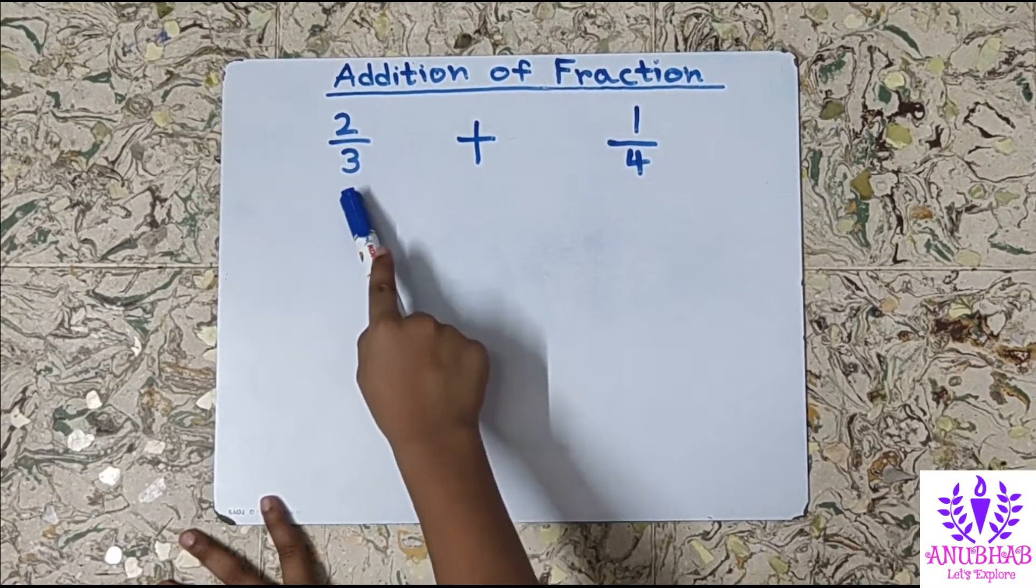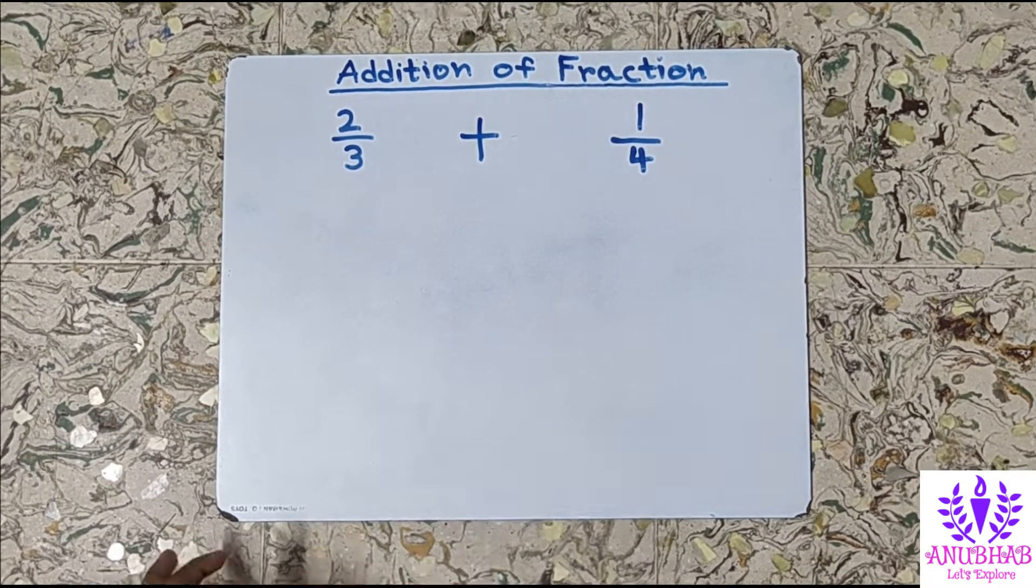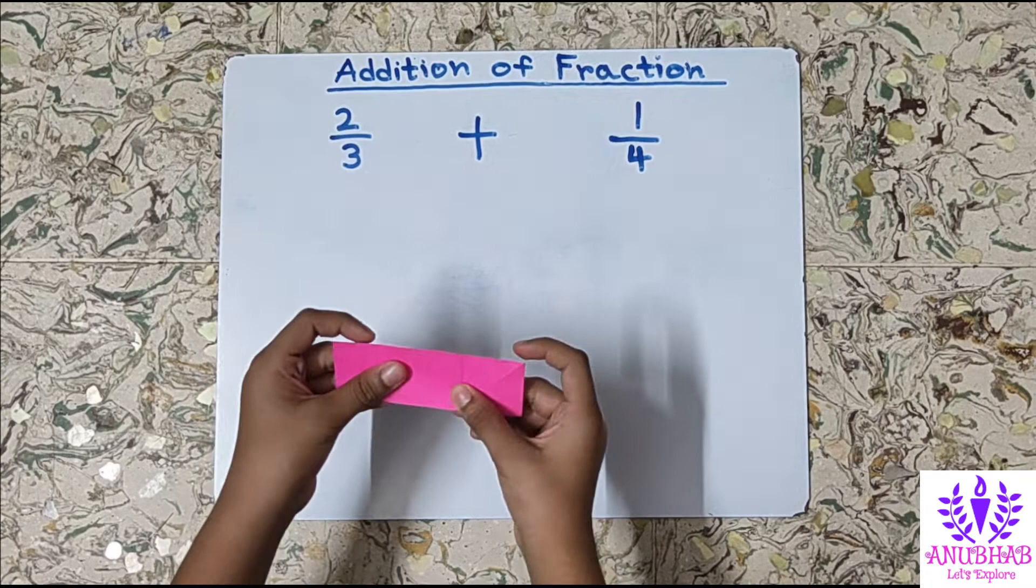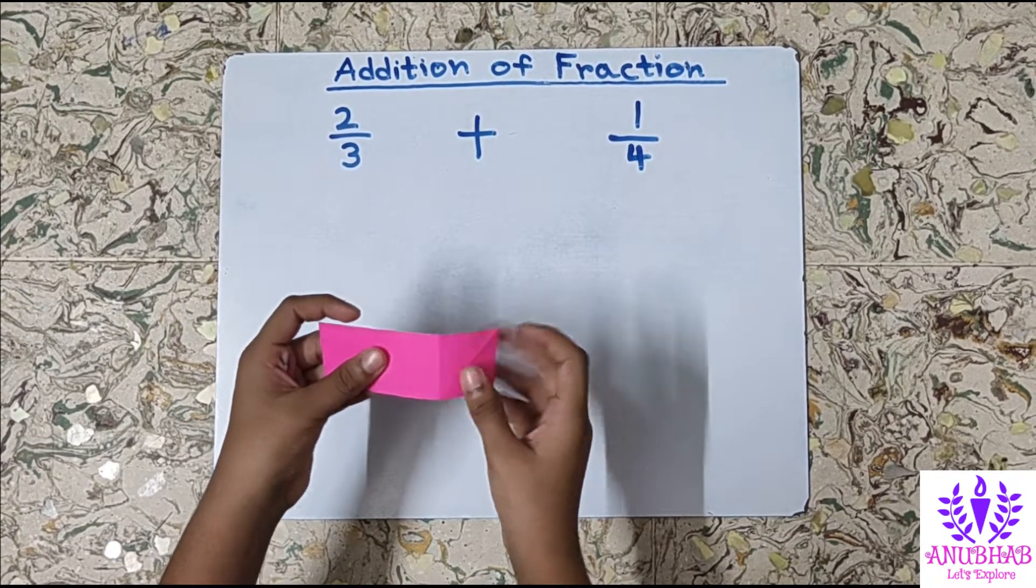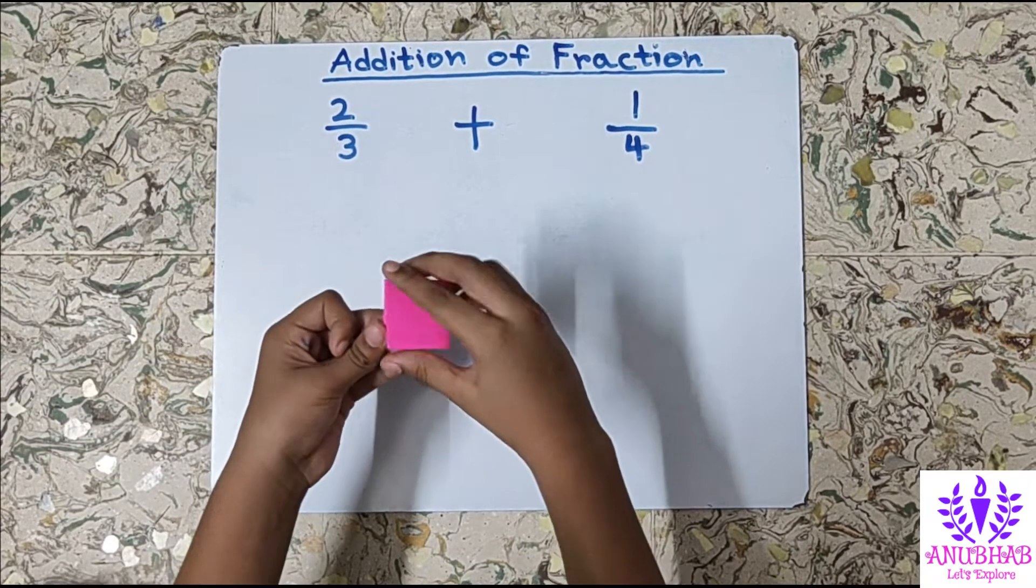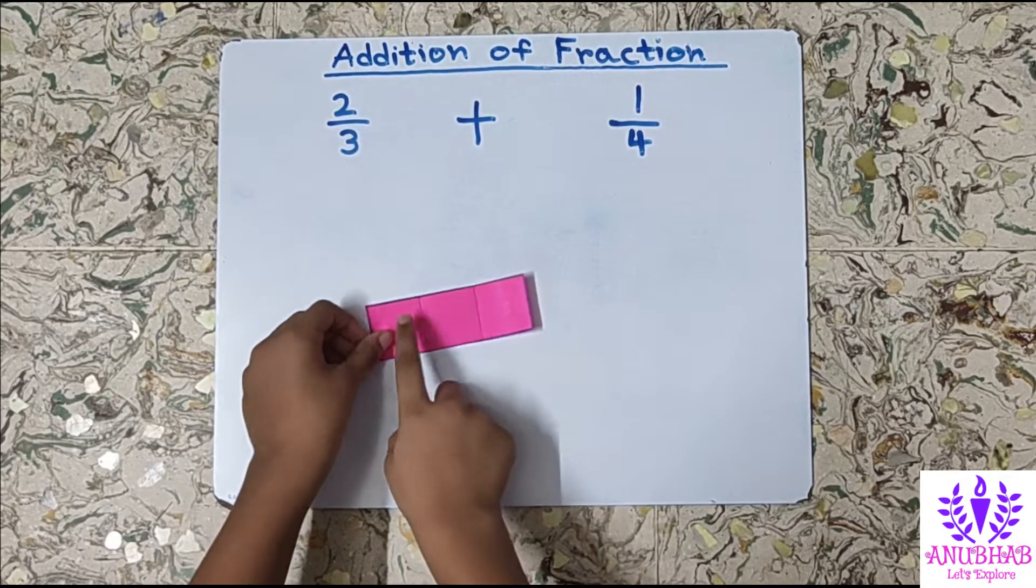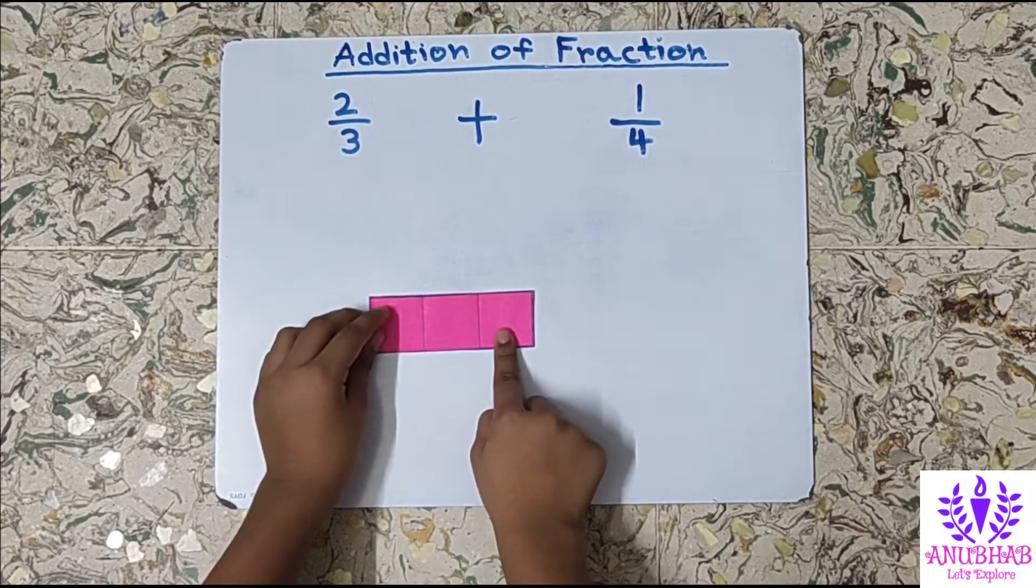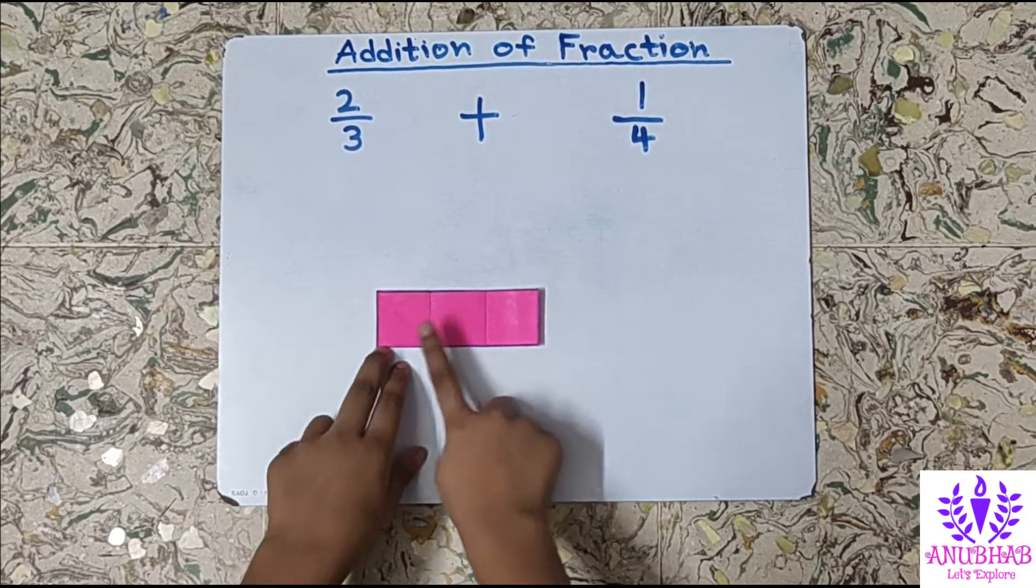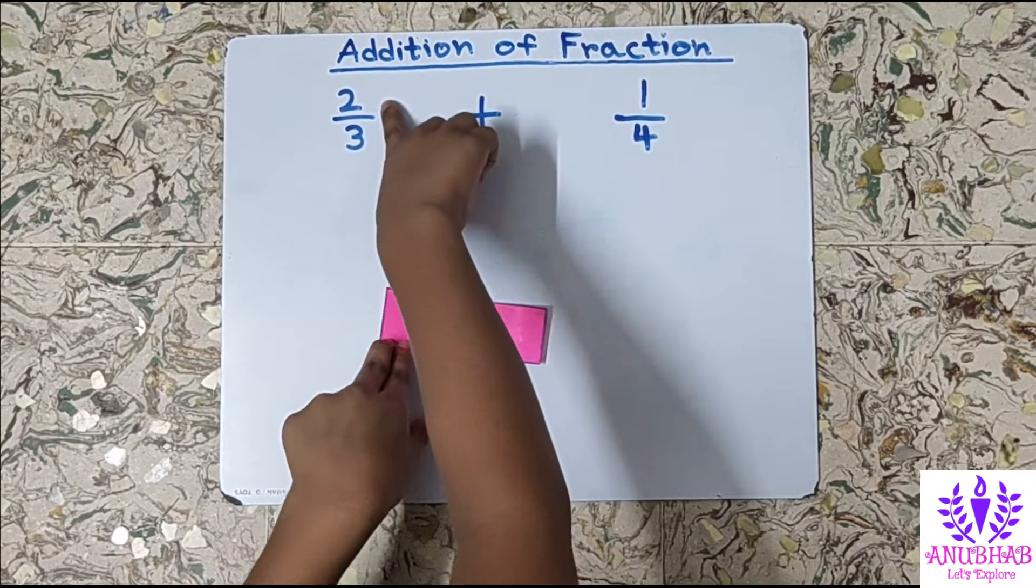We will represent 2 by 3 with the help of color strips. We will fold it into 3 equal parts. Now open it. See friends, I have 3 equal parts: 1, 2, and 3. Now we will shade 2 of the parts among these 3 parts because the numerator is 2.